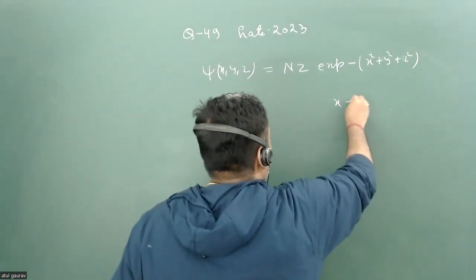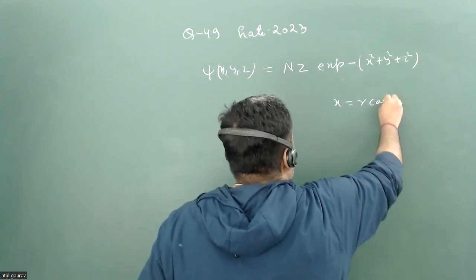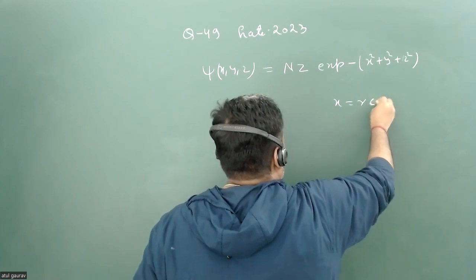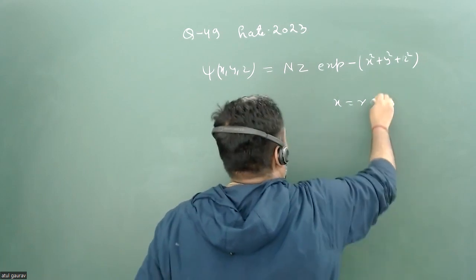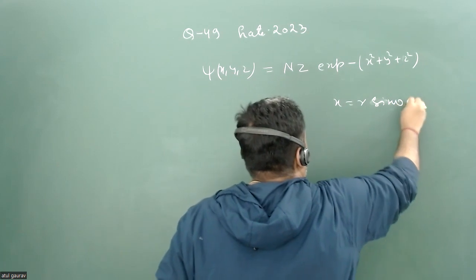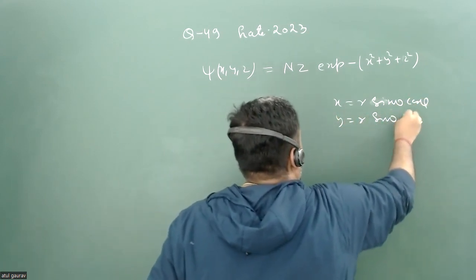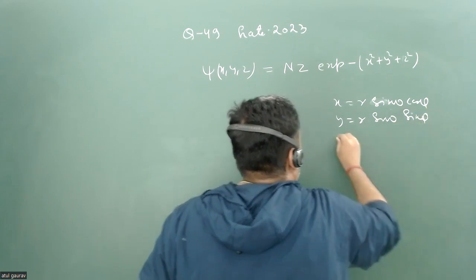So let's change it into spherical polar coordinates. We all know that x equals r sin theta cos phi.